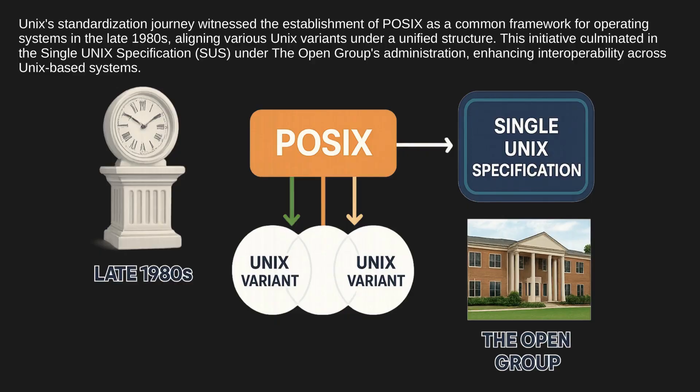Unix's standardization journey witnessed the establishment of POSIX as a common framework for operating systems in the late 1980s, aligning various Unix variants under a unified structure. This initiative culminated in the Single Unix Specification (SUS) under the Open Group's administration, enhancing interoperability across Unix-based systems.